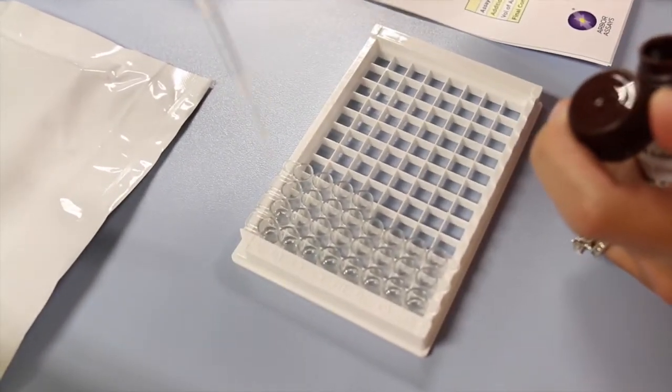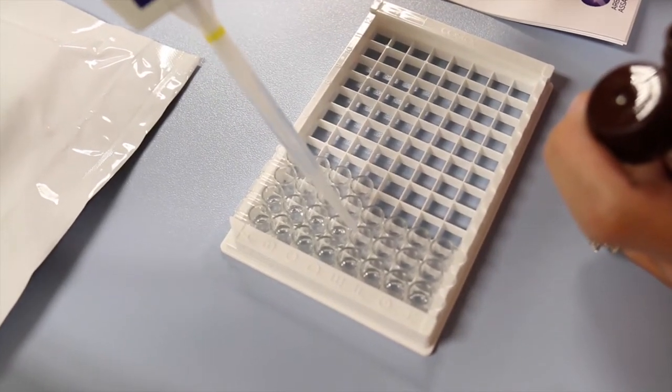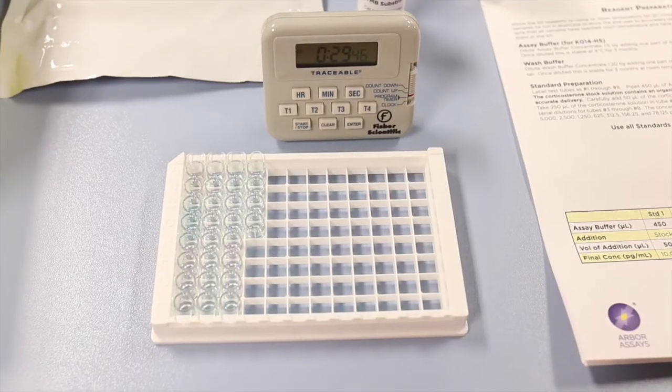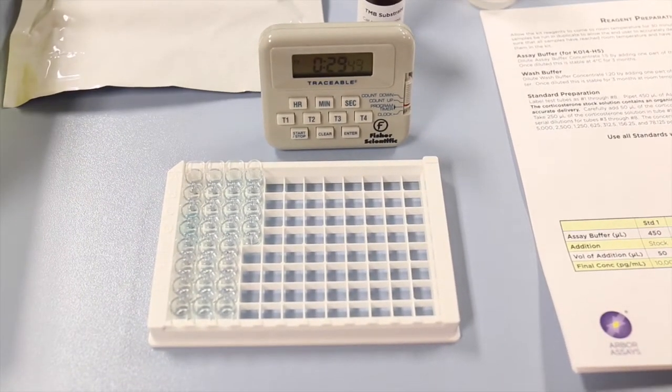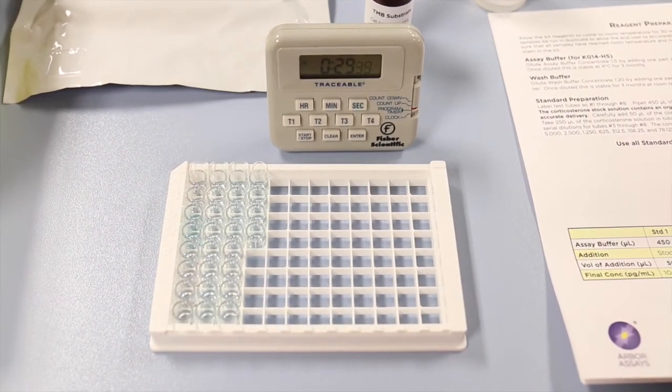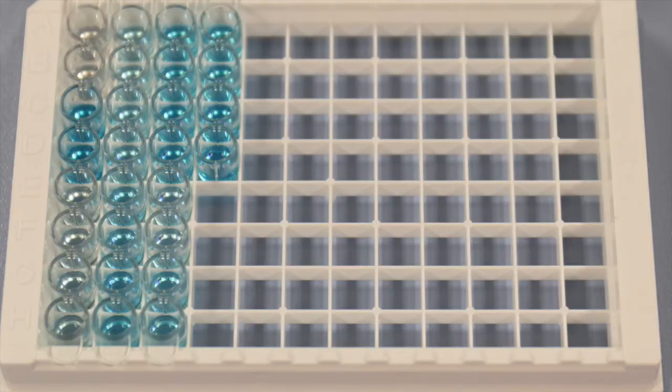Add substrate to each well using a repeater pipette with a tip designated for our TMB substrate. Incubate at room temperature. There is no need to keep the plate dark, it can be left on the bench top. As the TMB reacts with the bound peroxidase reporter enzyme, it develops a blue color.